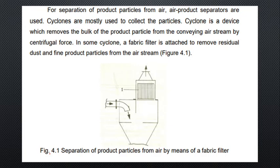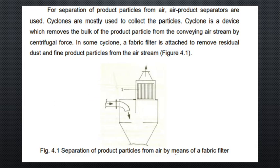Product particles are separated from air using product separators, for example a cyclone. A cyclone is a device which separates bulk product particles from the conveying air stream by means of centrifugal force. Fabric filters are also attached, whose main working is to remove residual dust and fine product particles from the air stream.